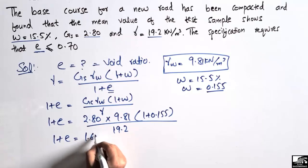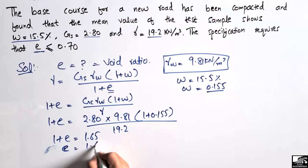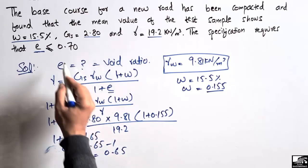Now 1 plus e, or we can shift this 1 to the right side, so we get e is equal to 1.65 minus 1. So e comes out to be 0.65.